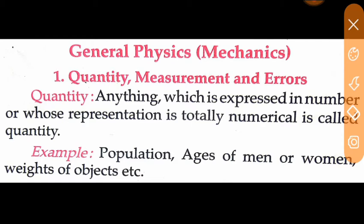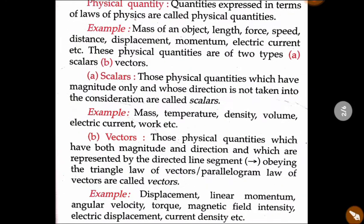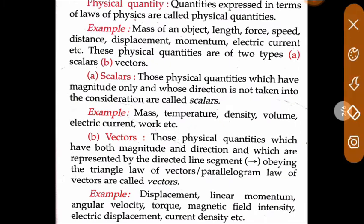When we talk about the number or numerical value, if the value is mentioned in numbers, that is called quantity. For example, population, age, and weight—when these are expressed in numbers, they are quantities. In physics, these are called physical quantities.